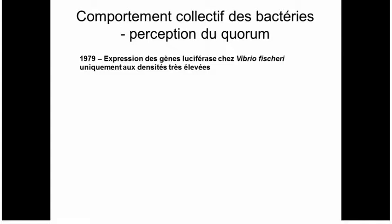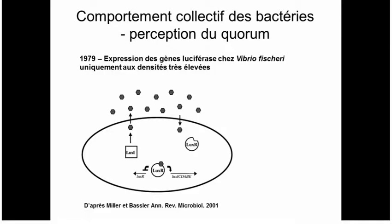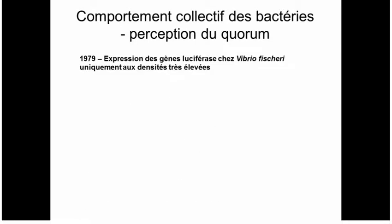Over the next decade or two, researchers worked out what was controlling this system. The genes were expressed by all bacteria simultaneously, and it depended on how many of them were present — somehow they had a way of measuring how many bacteria were locally present. This is called quorum sensing. A quorum is when you have enough people to take a valid decision. This activity — producing the luciferase enzyme — only occurs when there are enough bacteria.